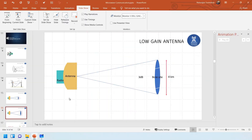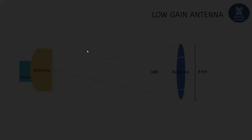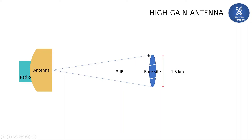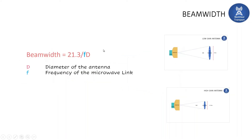Returning to the presentation: with a lower beam-width antenna, the diameter of the wave circle is about 1.5 kilometers. But if you use a low-gain antenna, that diameter goes up to four kilometers and you receive very little power. With such low power you cannot decode the baseband signal, because there is a minimum power level required for the receiver — this is called receiver sensitivity.